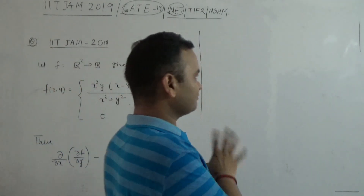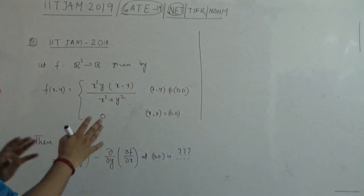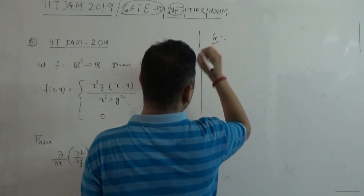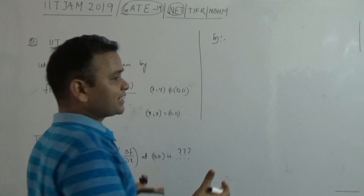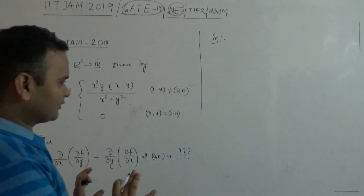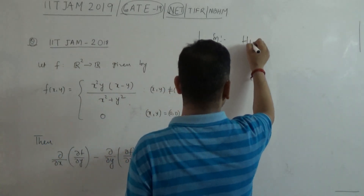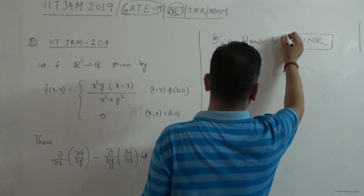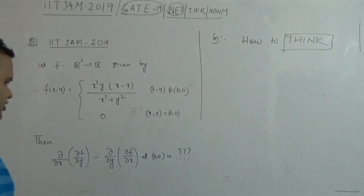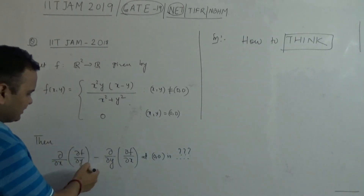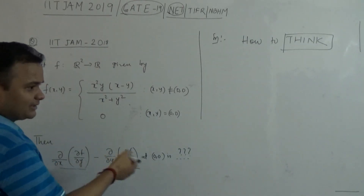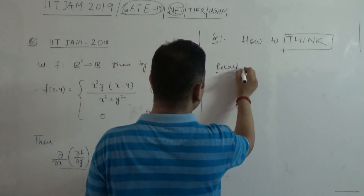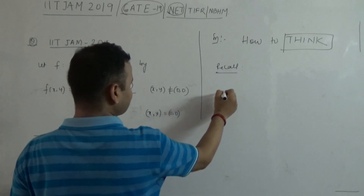How do we deal with these questions? How do we approach and think about this kind of problem? That is important. So first, let me recall this kind of basic stuff. If someone is asking: del by del x of del f by del y at a certain point, let's say (a, b) — what do we do?